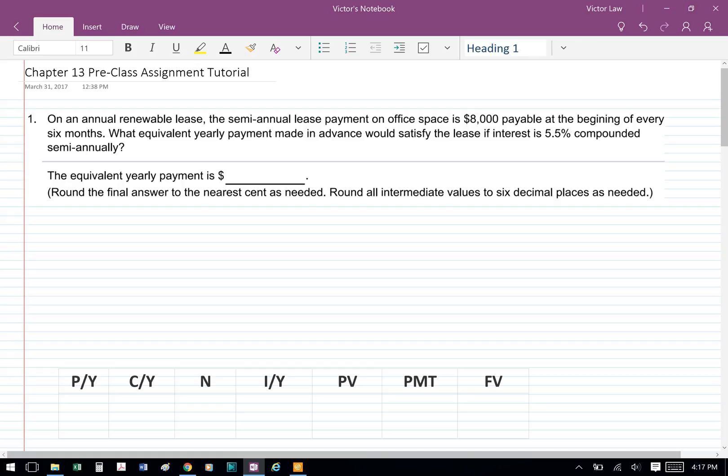On an annual renewable lease, the semi-annual lease payment on office space is $8,000 payable at the beginning of every six months. What equivalent yearly payment made in advance would satisfy the lease if interest is 5.5% compounded semi-annually?